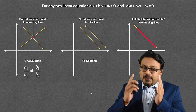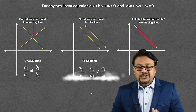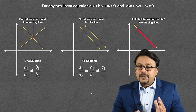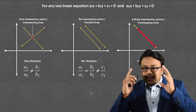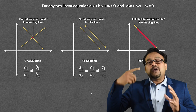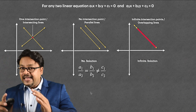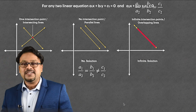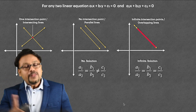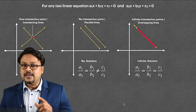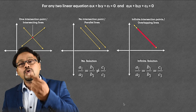When the lines are parallel, the condition is: a1 upon a2 equals b1 upon b2, but NOT equal to c1 upon c2. So whenever a1/a2 = b1/b2 but ≠ c1/c2, then the lines are parallel and there is no solution. For lines to be coincident or overlapping, the condition is: a1/a2 = b1/b2 = c1/c2 — all three ratios are equal. Whenever the lines are overlapping or coincident, all three ratios are equal.